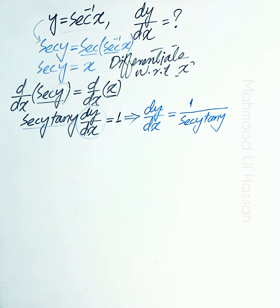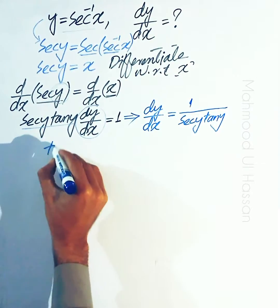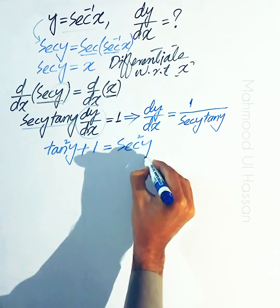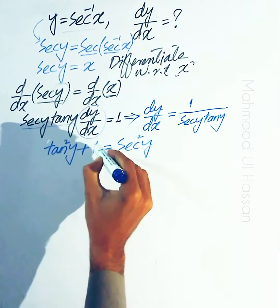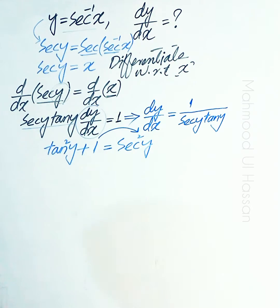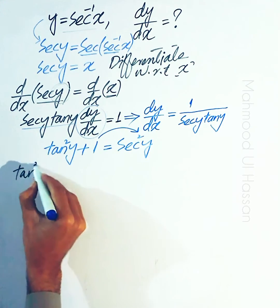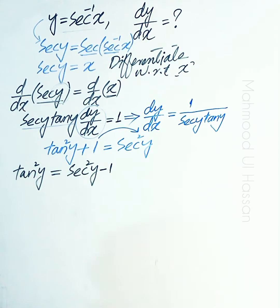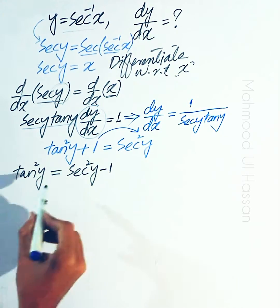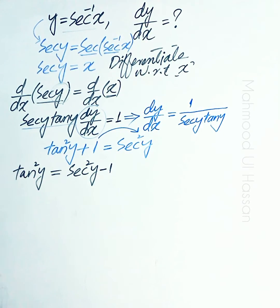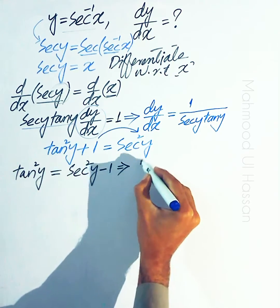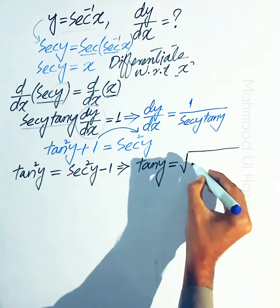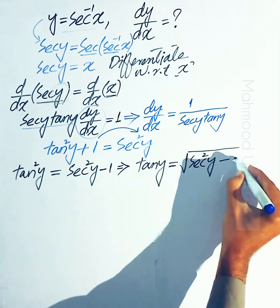So we get dy over dx is equal to 1 divided by secant y into tangent y. Now we use the identity: tangent squared y plus 1 is equal to secant squared y. We find tangent squared y by shifting the constant: tangent squared y equals secant squared y minus 1. Taking the square root of both sides gives tangent y equals square root of secant squared y minus 1.